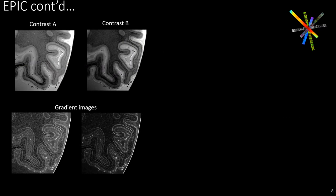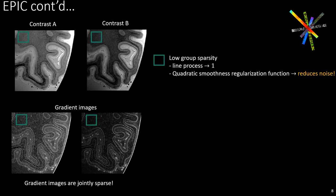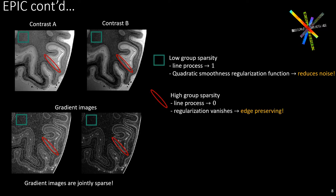For intuitive understanding, let's assume we have two contrasts imaging the same anatomy. The gradient images find the same anatomical boundaries for both contrasts, indicating that these gradient images are jointly sparse. In a locally smooth region, the group sparsity of the gradient image is low and the shared edge prior reduces to a quadratic smoothness function, which is great for reducing noise. In regions with edges, the group sparsity is high and the regularization function starts vanishing to prevent smoothing of anatomical boundaries.